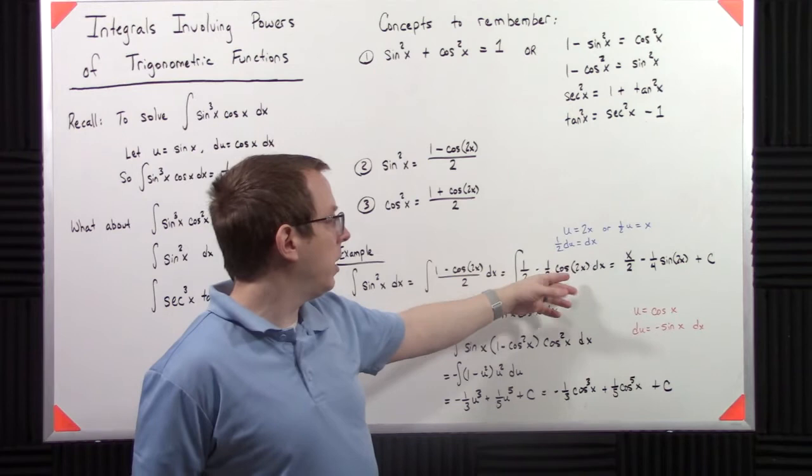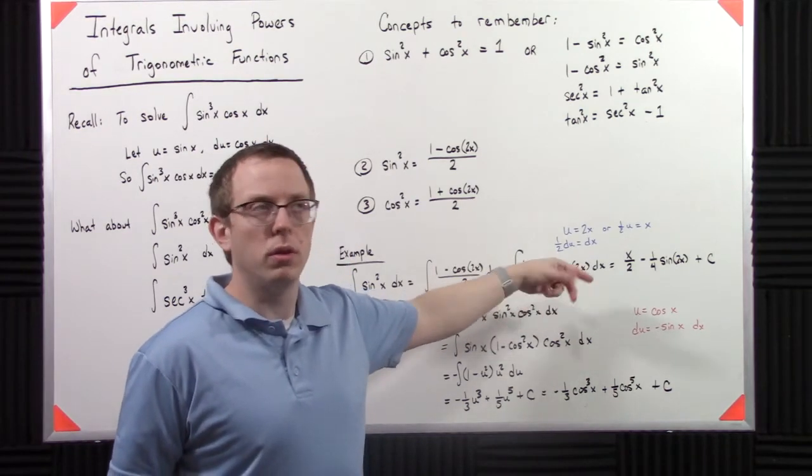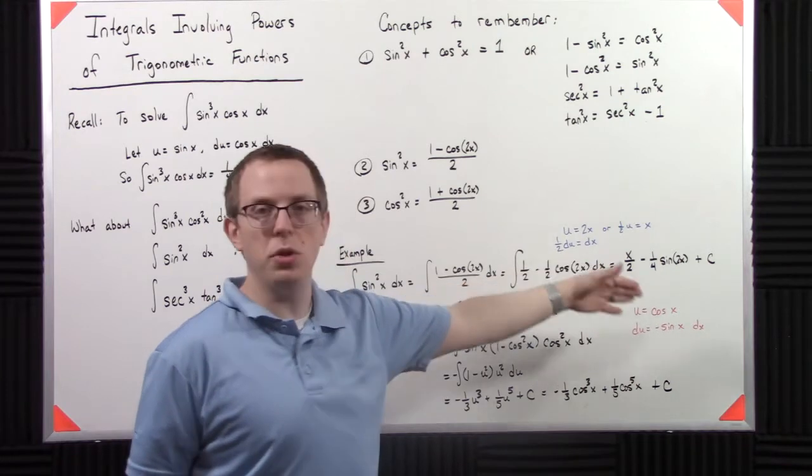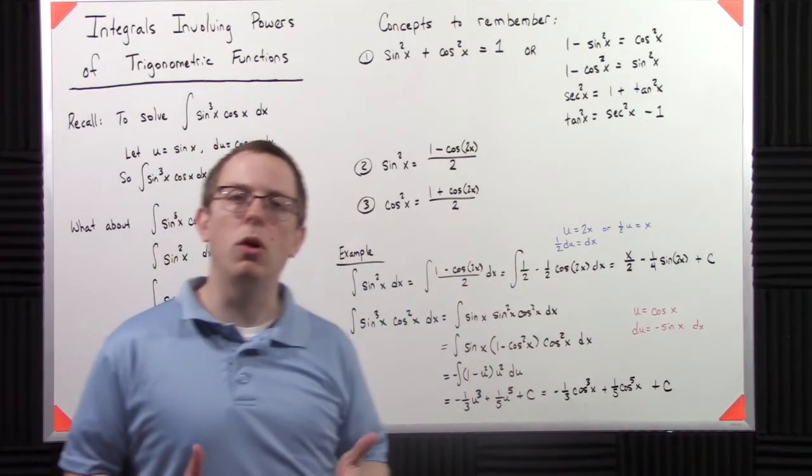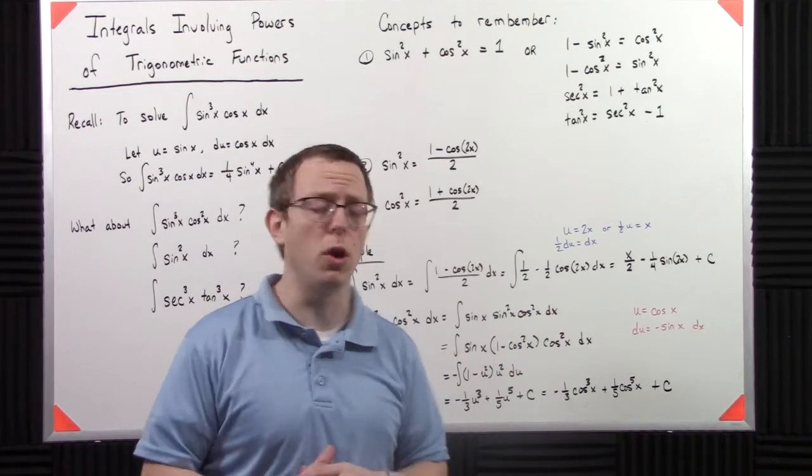So if I take my u substitution to be u equals 2x, and then 1 half du will be equal to dx, what I end up getting is a negative 1 fourth cosine of u du. Again, I'm not walking all the way through this because I'm expecting that you kind of know how to do this or can do it on your own.